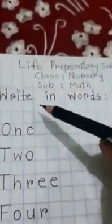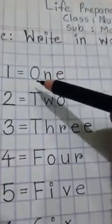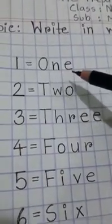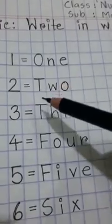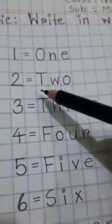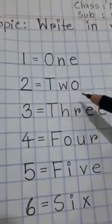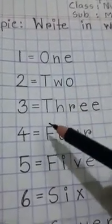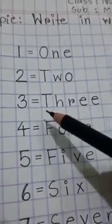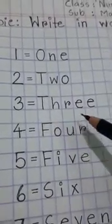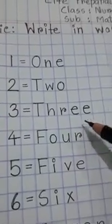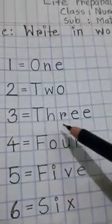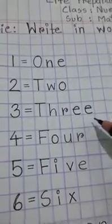Then everybody follow, copy, and say with me. O-N-E. One. Here is two — T-W-O. Two. Here is three — T-H-R-E-E. Three.